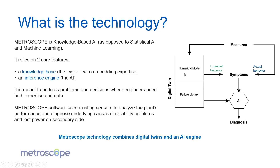For that, we not only use our digital twin to get the expected behavior of the plants, but also to get the possible states in which the plant could be because of failures. We add failures based on the expertise we have on the process, and then with this failure modeling, we try with an inference engine to match what failures could explain the symptoms we see. That is what we call diagnosis.